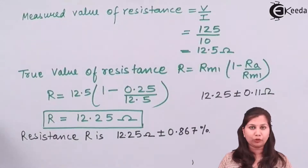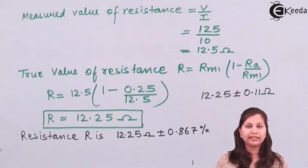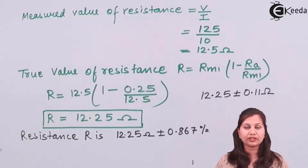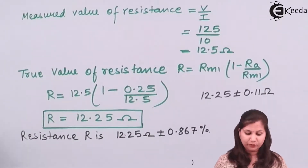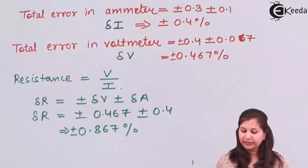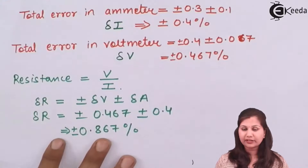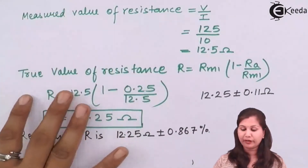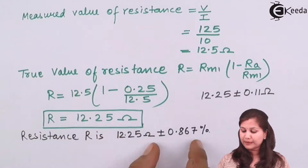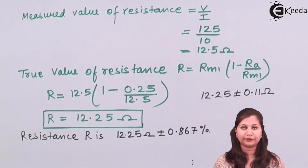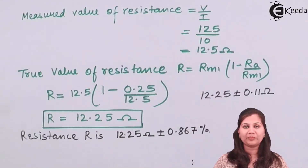In this problem we were given the ammeter and voltmeter. Two types of errors were given: the reading error, since these instruments can read 1 by 10 of a scale division clearly, and the constructional error in the ammeter and voltmeter. First we calculated the total error due to the instruments, then we calculated the error in resistance, then the measured value, and finally the true value of resistance. The resistance is specified as the true value plus minus the total error. I hope this problem is clear to you. Thank you.